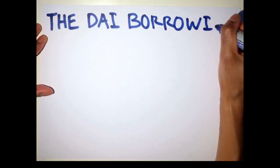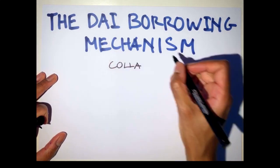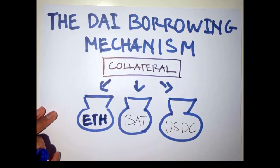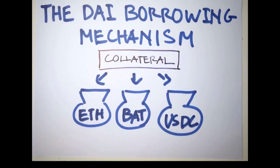Now, let's talk about the DAI borrowing mechanism. In order to borrow DAI, you first need collateral. The collateral can be in Ether, BAT or USDC.